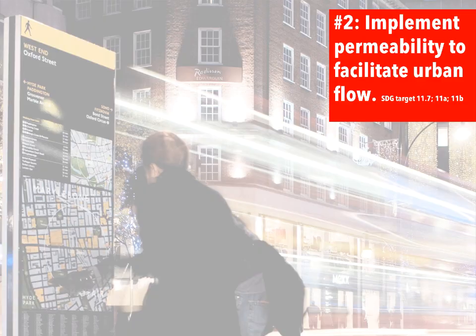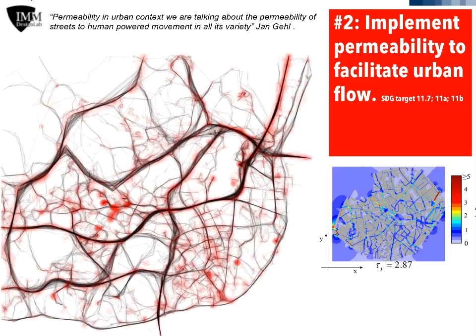DOP No. 2, Implement Permeability to Facilitate Urban Flow, is correlated with the UN's SDG targets 11.7, 11A, and 11B. This design ordering principle aims to address how different modes of mobility flows inside the urban fabric veins.